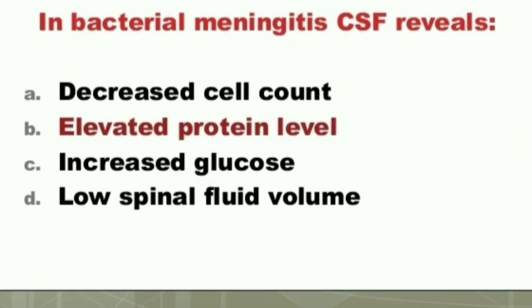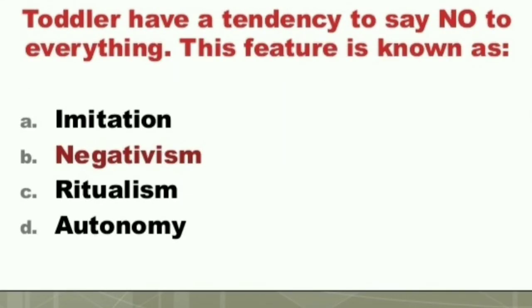Next question: In bacterial meningitis, CSF reveals: A) Decreased cell count, B) Elevated protein level, C) Increased glucose, D) Low spinal fluid volume. In bacterial meningitis, CSF reveals elevated protein level.